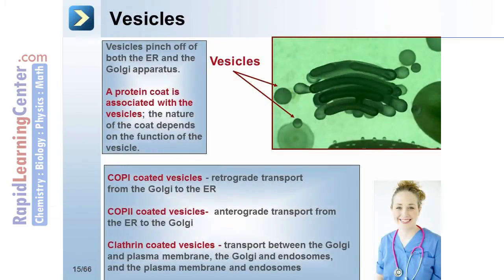Vesicles pinch off of both the ER and the Golgi apparatus. A protein coat is associated with the vesicles, and the nature of the coat depends on the function of the vesicle. For example, COPI-coated vesicles undergo retrograde transport from the Golgi to the ER; COPII undergoes anterograde transport from the ER to the Golgi; and clathrin-coated vesicles undergo transport between the Golgi and plasma membrane, the Golgi and endosomes, and the plasma membrane and endosomes.